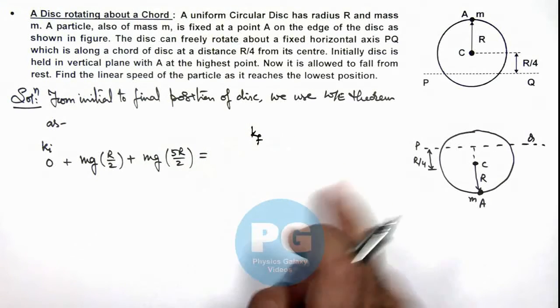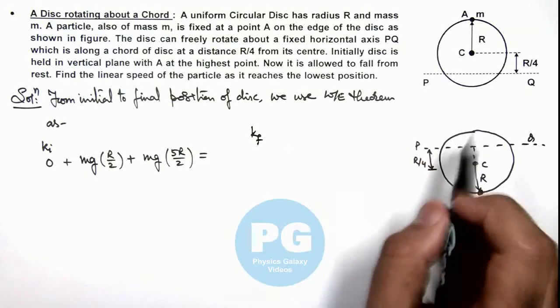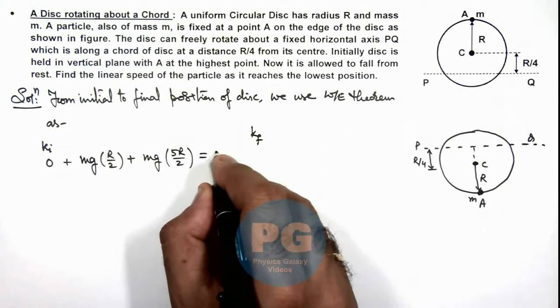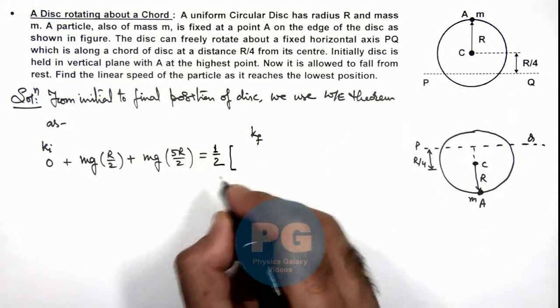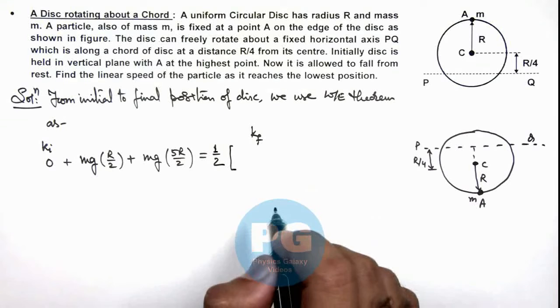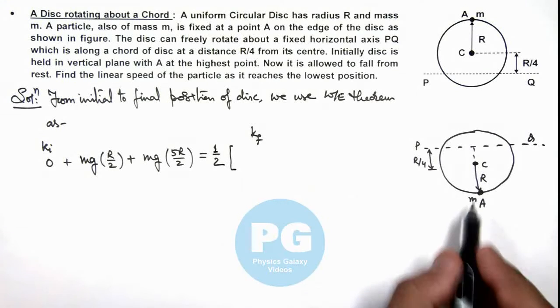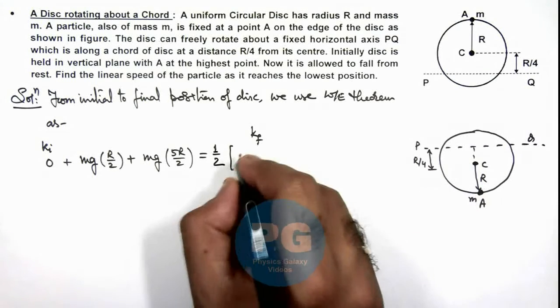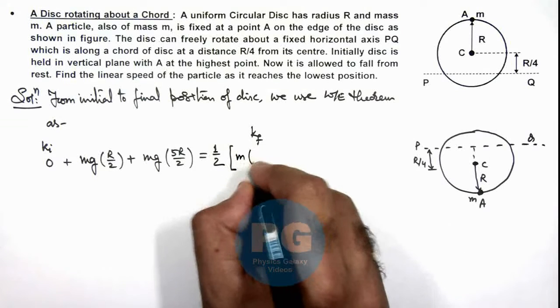This must be equal to the final kinetic energy of this system, which is rotating about the chord PQ. Then its total moment of inertia first we calculate, and we use energy as half I omega square. So half moment of inertia of this system we can write as: